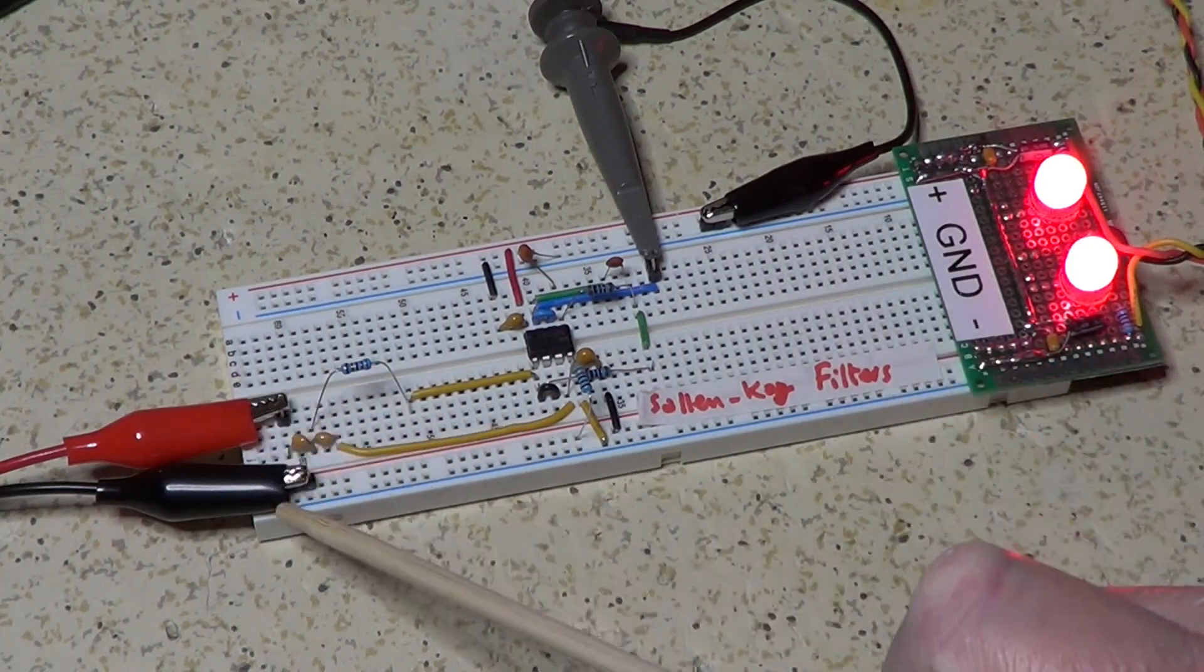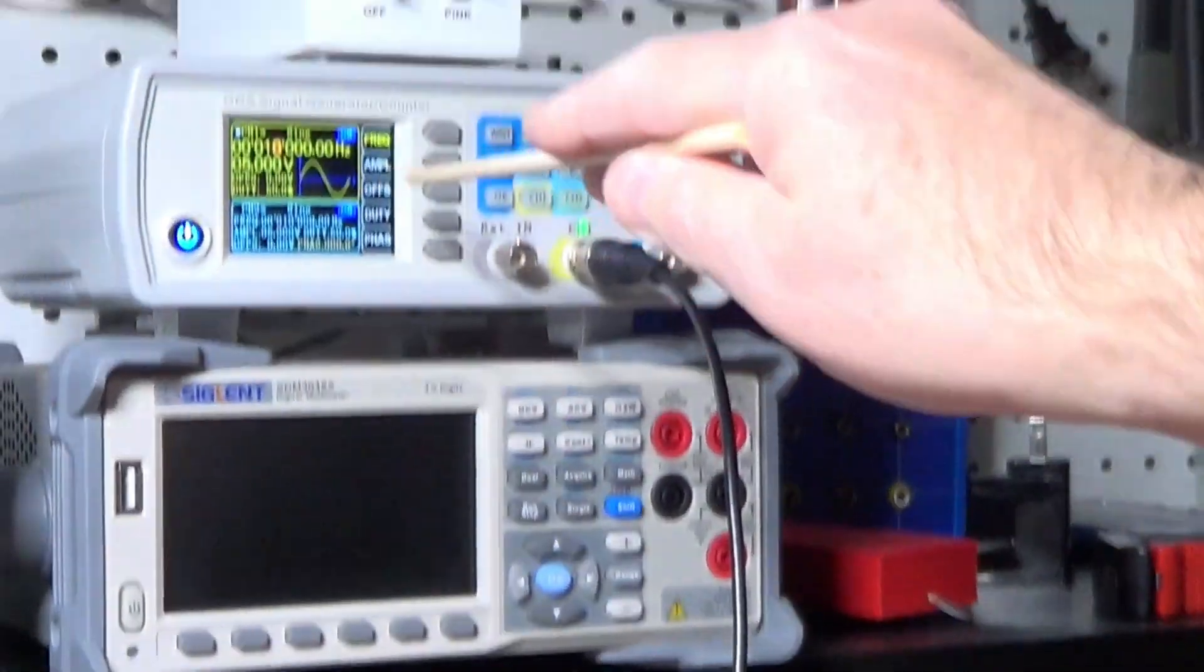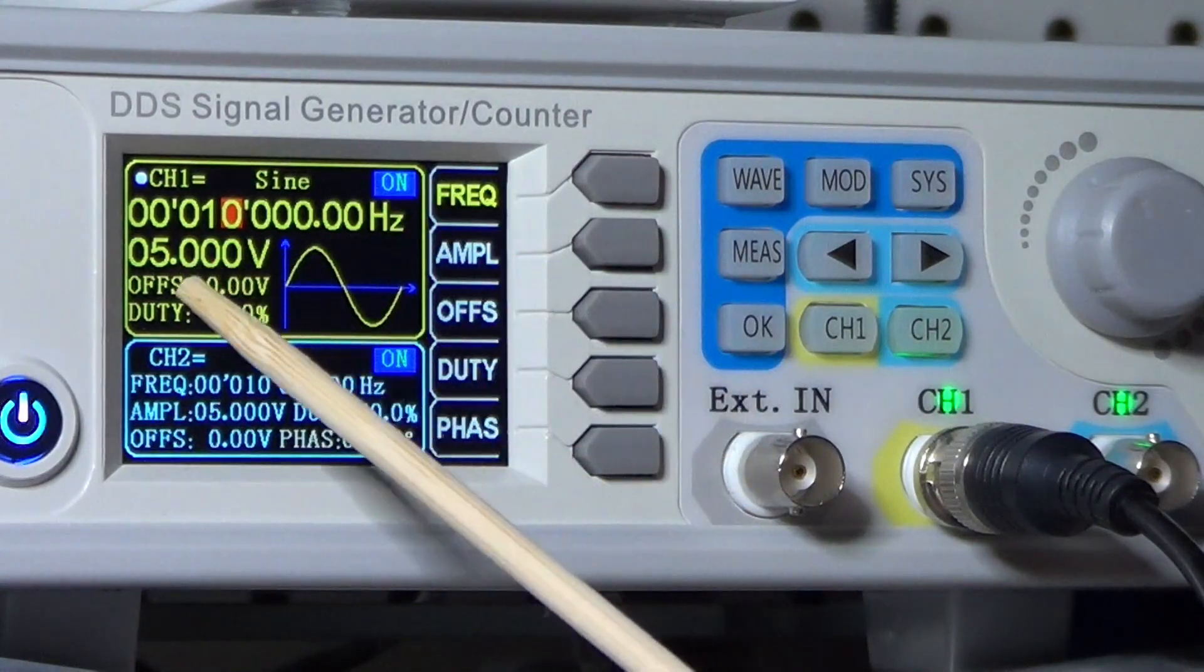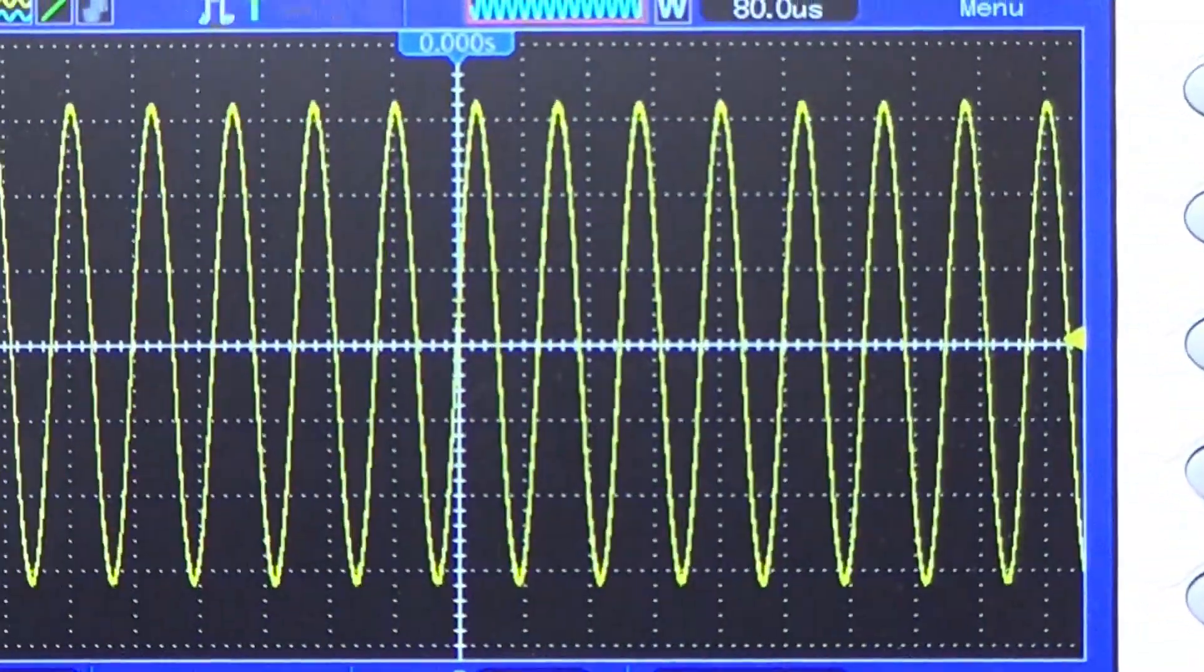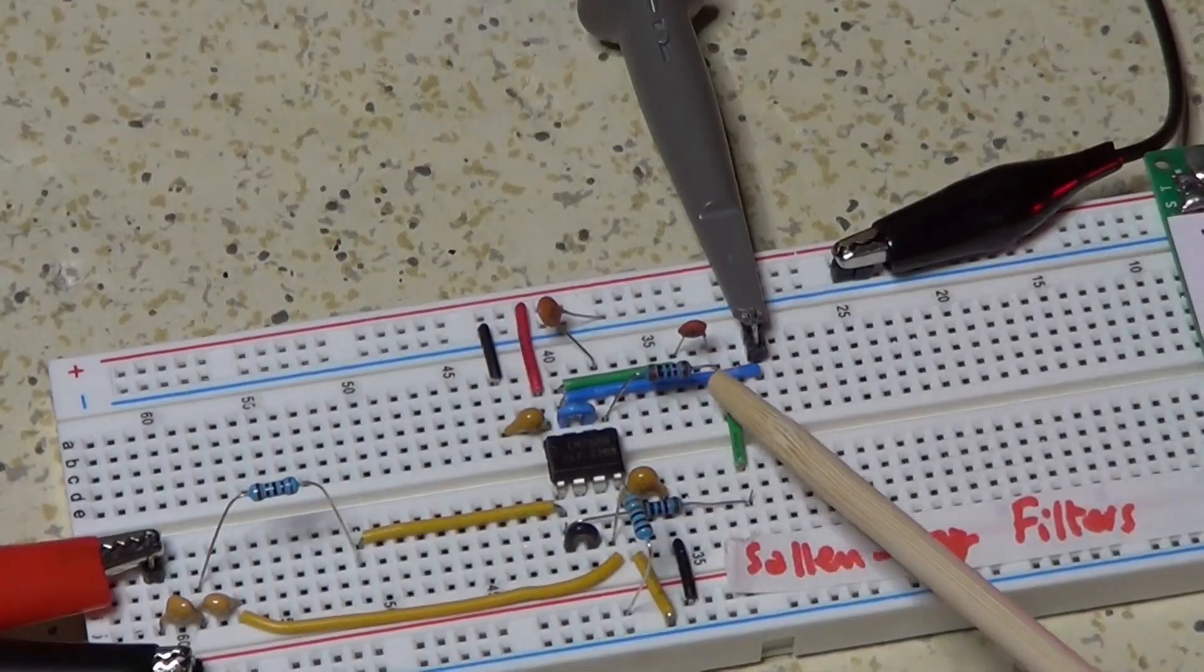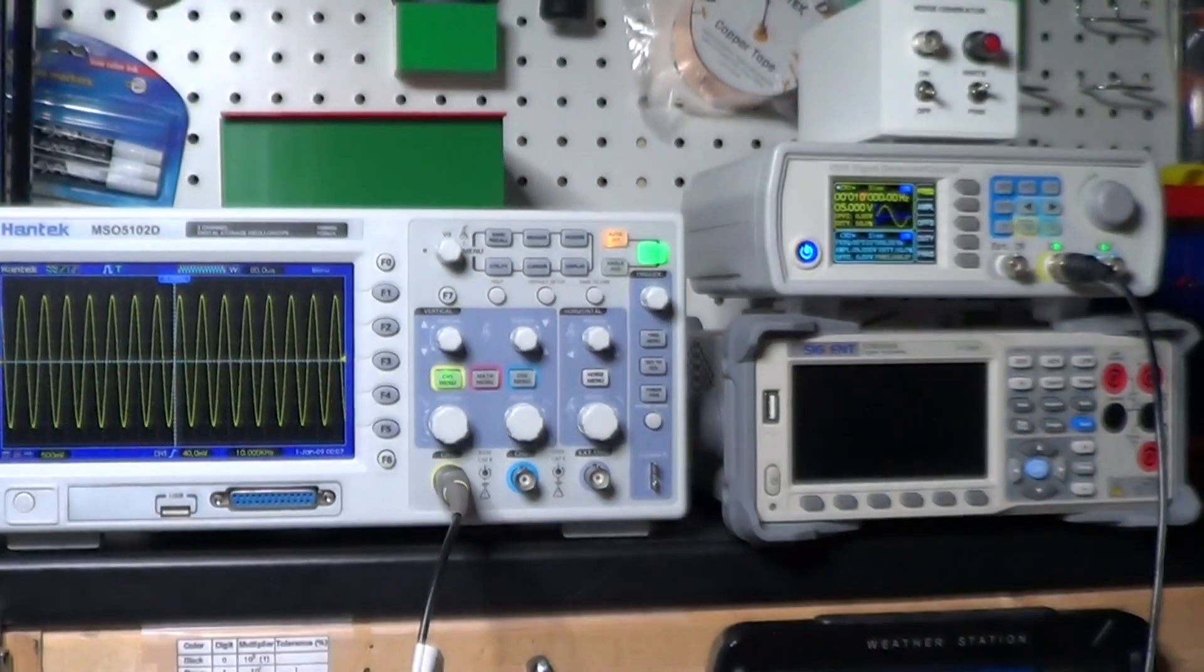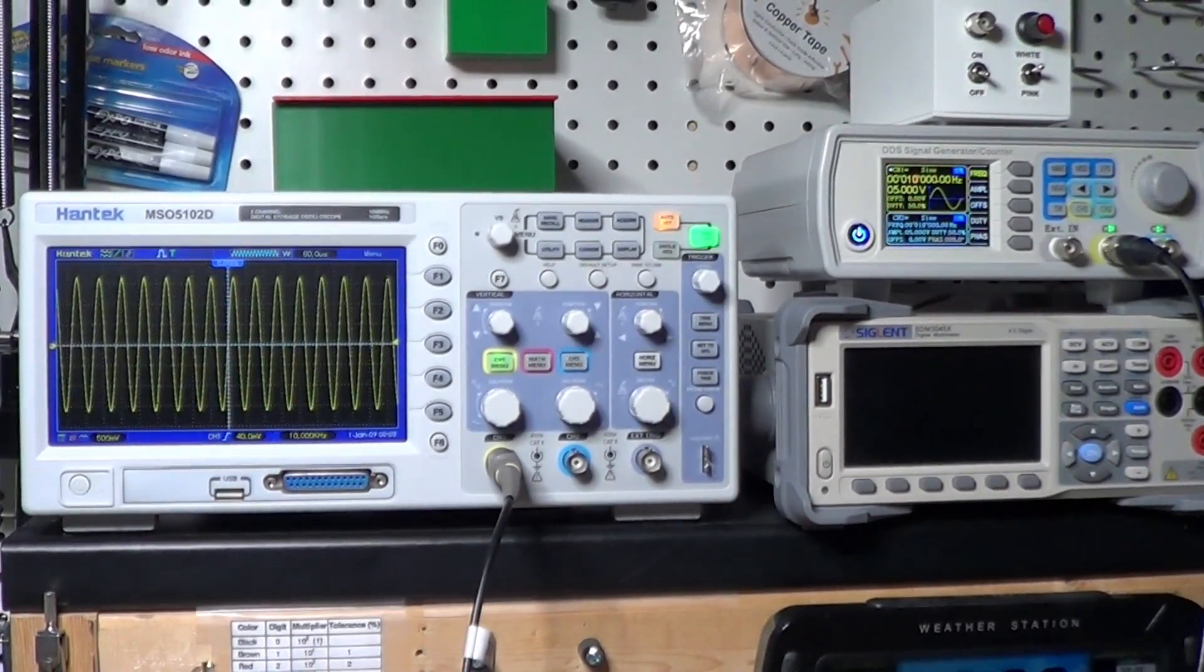On the input of the filter, I have put the output of my function generator right over here. And you can see that it's currently outputting 10 kHz, at 5 volts peak-to-peak, and it's a sine wave. And that sine wave is visible right here on the oscilloscope, which is connected to the output of the circuit, which is basically the output of the low-pass part of the filter. So, let's take a look now at what happens when we change the frequency of the function generator. I'm trying to put both of them here at the same time in the view, so you can see what happens.